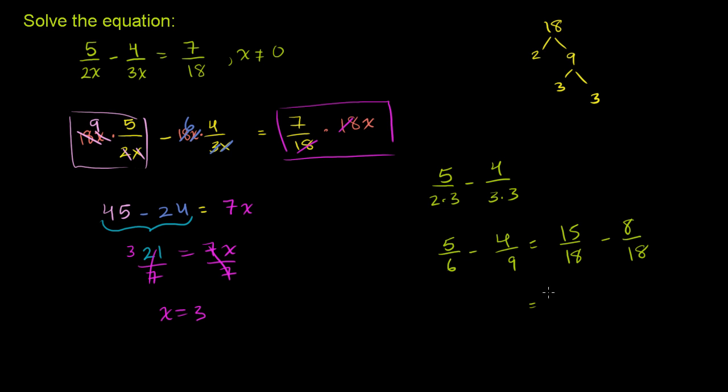15 minus 8, so this becomes 15 minus 8 over 18, which is equal to 7 over 18.